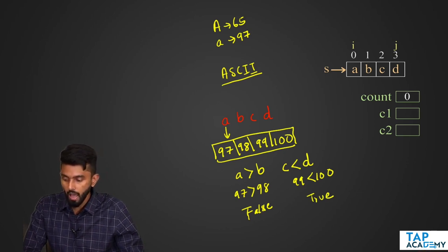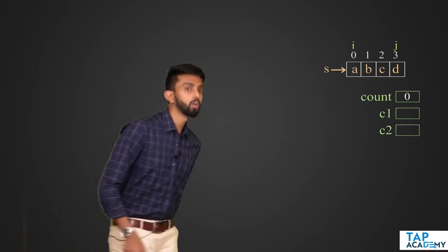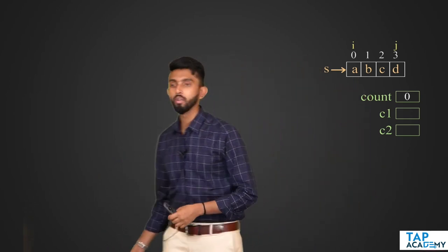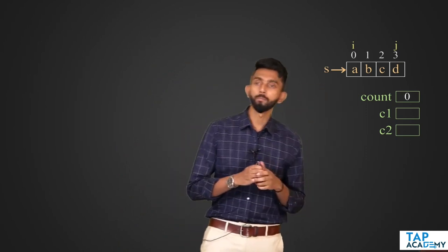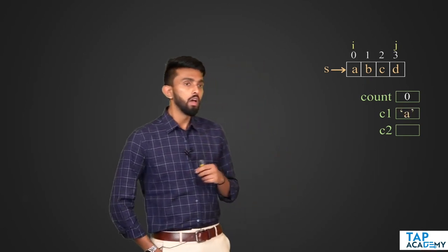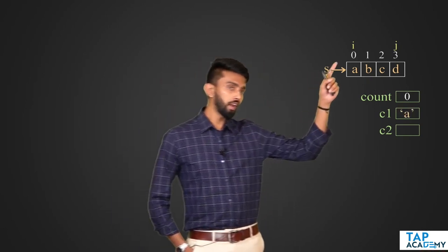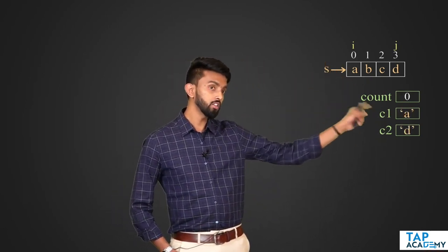Now that you know characters are actually ASCII values, I'm going to go ahead and write some code. I will take the character at the ith position, and the character at the jth position — that's A and D stored in C1 and C2.